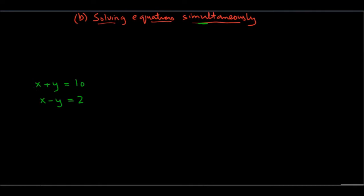So let's see how we go about doing that. So let's say we have two equations like these: x plus y equals 10, x minus y equals 2. We want to find one pair of x and y values that satisfies both of these equations at the same time. That satisfies both the equations.